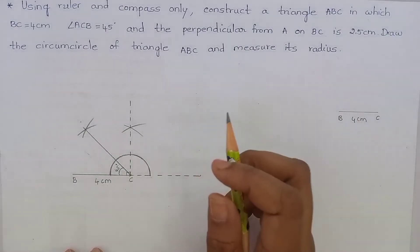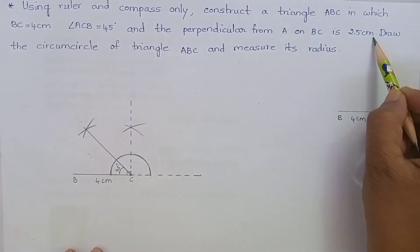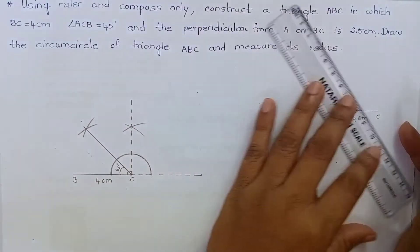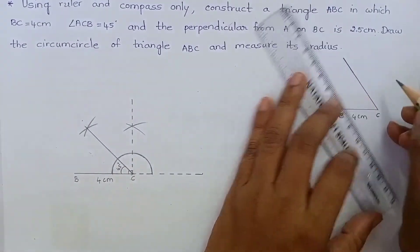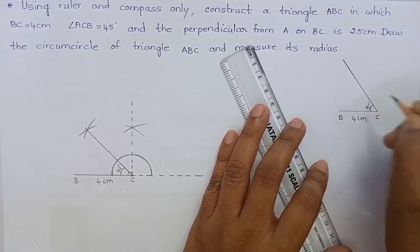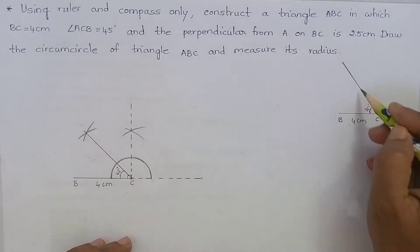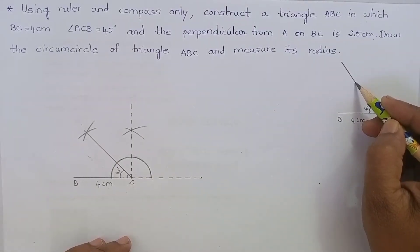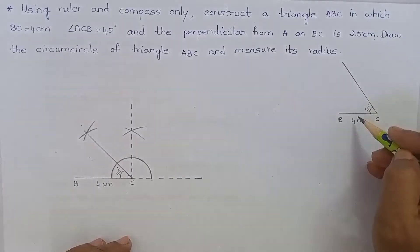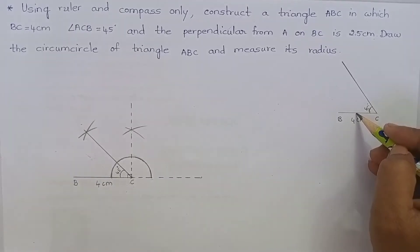Now let us come to the question. The perpendicular from A on BC is 2.5 cm. Let me explain the meaning of this. We have constructed 45 degrees at the point C. We have to mark a point A on this line such that if we draw a perpendicular line from the point A on BC, then it should measure 2.5 cm. Let me explain this clearly.